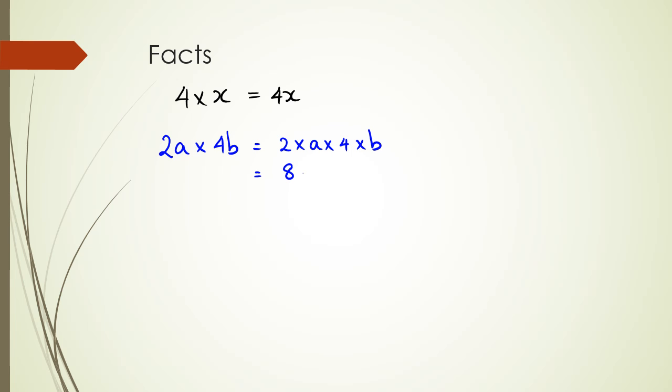Now another key thing to remember with algebraic terms is that you always write the letters in alphabetical order. So for example, this answer you could also have written it as 8ba or ba8, but in maths what we do is we always write the number first, then the alphabet, whatever variable that is that we're using.